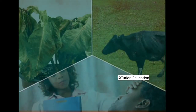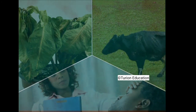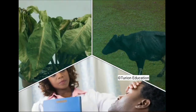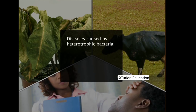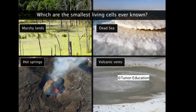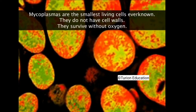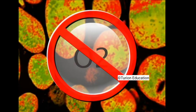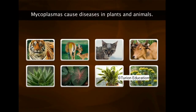Some heterotrophic monerans are harmful disease-causing pathogens that affect humans, plants, and animals. Examples of diseases caused by bacteria include tuberculosis, typhoid, cholera, and tetanus. Mycoplasmas are the smallest living cells known; grouped under eubacteria, they are devoid of a cell wall, can survive without oxygen, and most of them cause diseases in plants and animals.